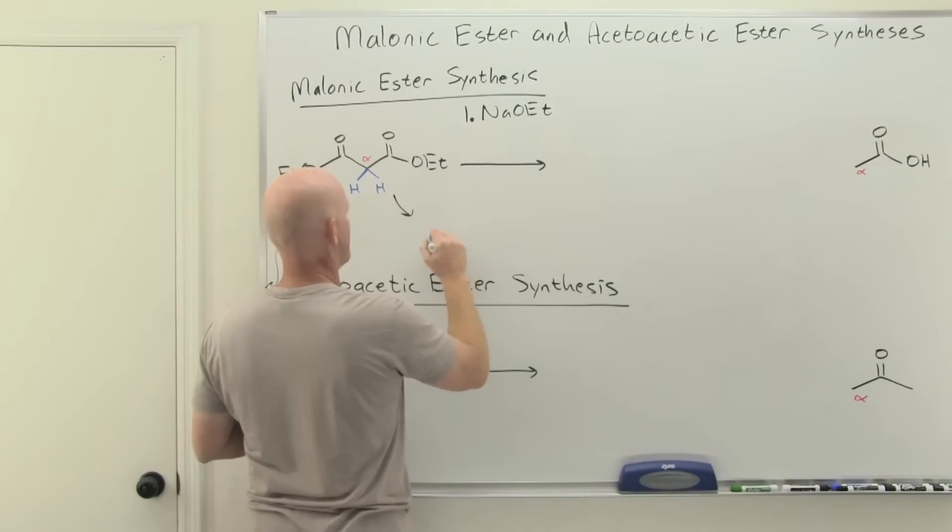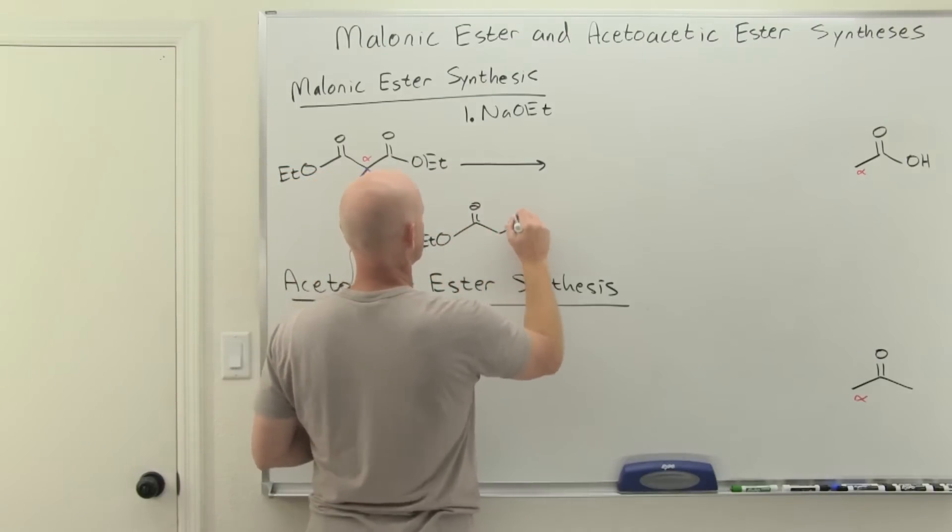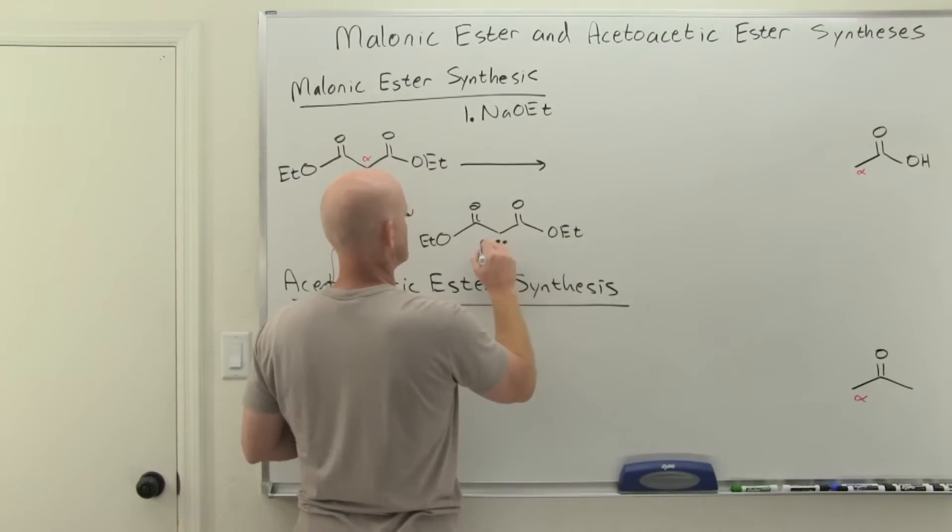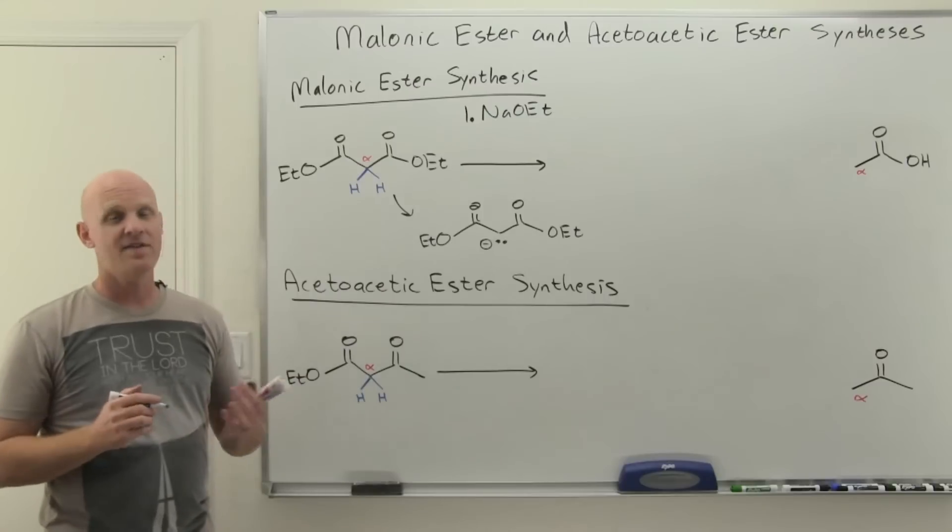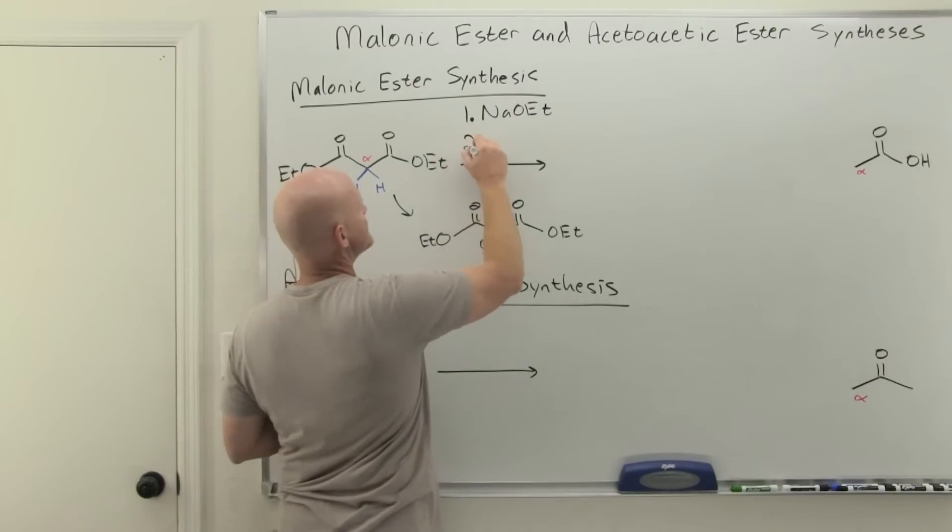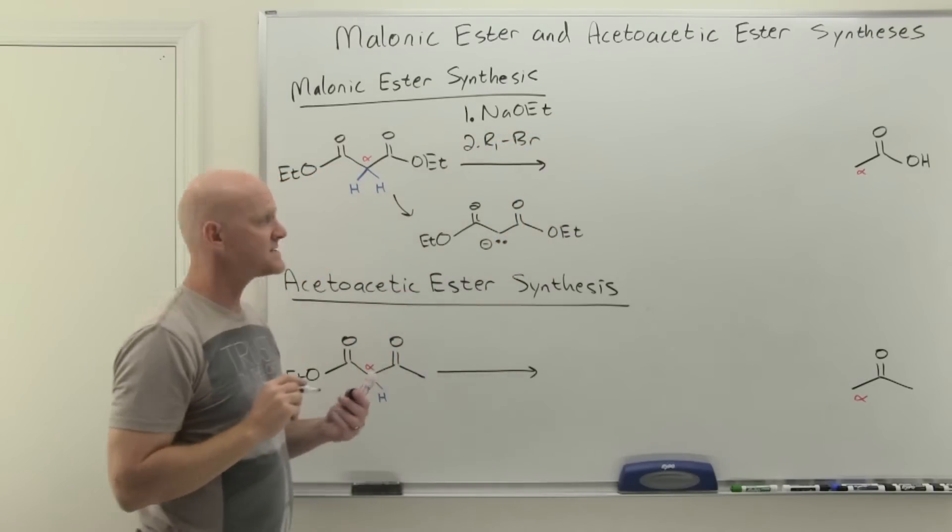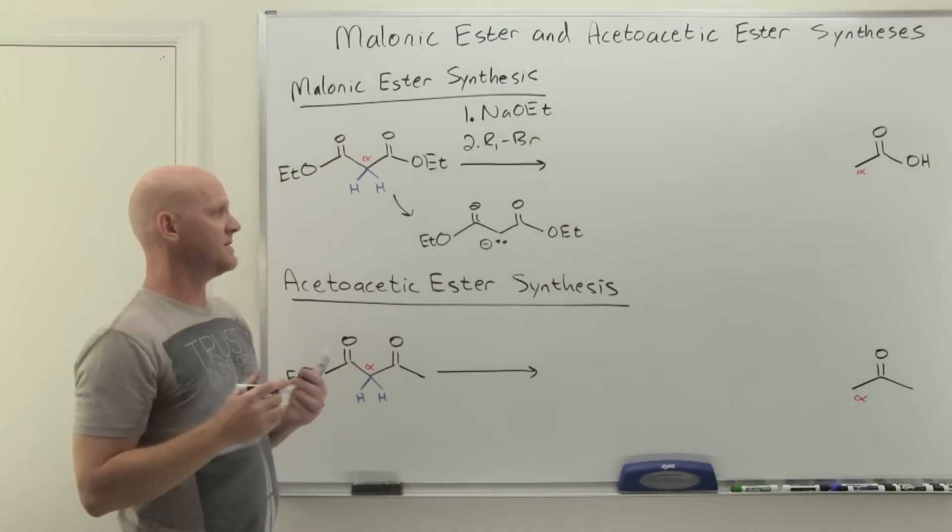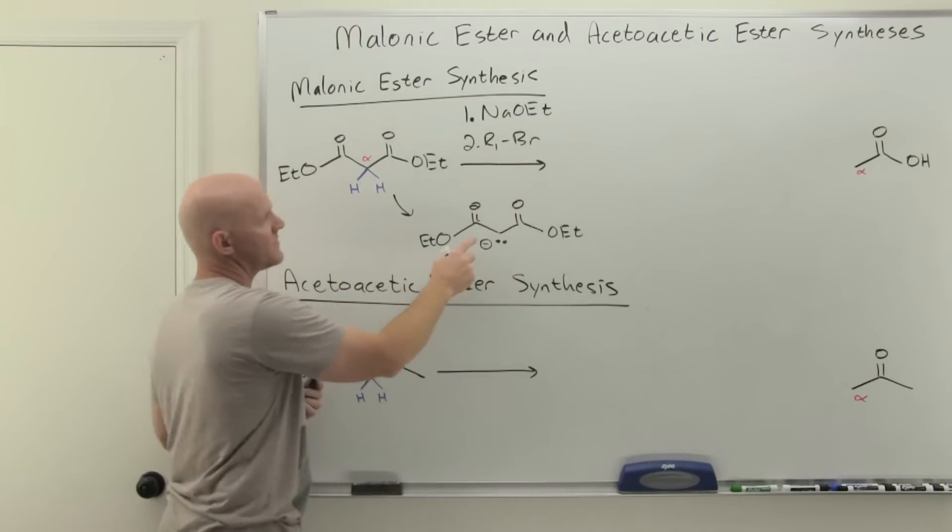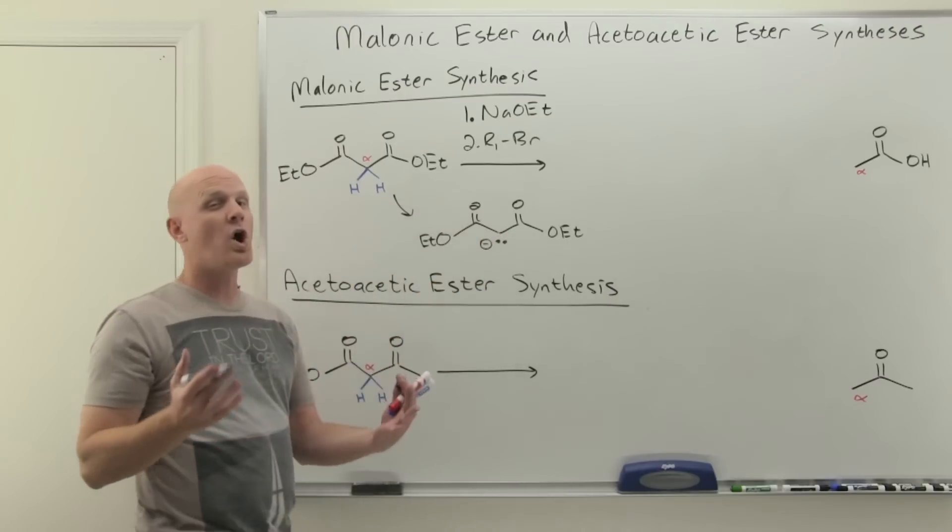Notice our ester here, if we kind of generically work out the intermediates, is going to turn into an enolate. And then that enolate is going to come and attack an alkyl halide. In this case, I'm going to generically write R1 with a bromine. That's just where we're going to start. And then he's going to come and do backside attack on R1 and kick off the bromine.